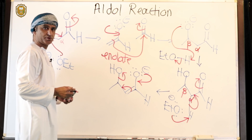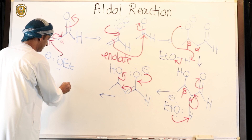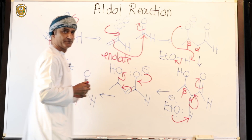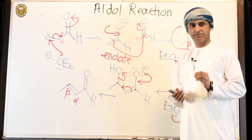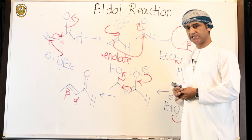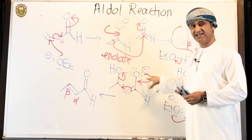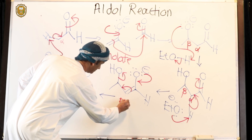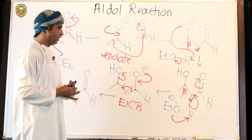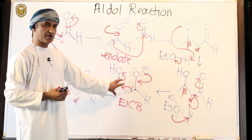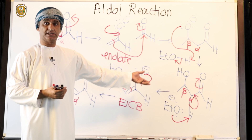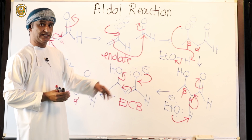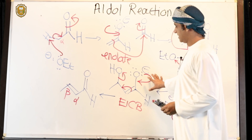With departure of the hydroxyl leaving group, the final alpha-beta unsaturated carbonyl compound is formed, where there is a double bond between the alpha and beta carbon. This elimination reaction is very unique — it's called E1CB, an E1CB type elimination reaction, where elimination takes place on the conjugate base. The aldehyde acted as an acid, so that enolate is the conjugate base, and the first-order kinetic elimination takes place on the conjugate base.